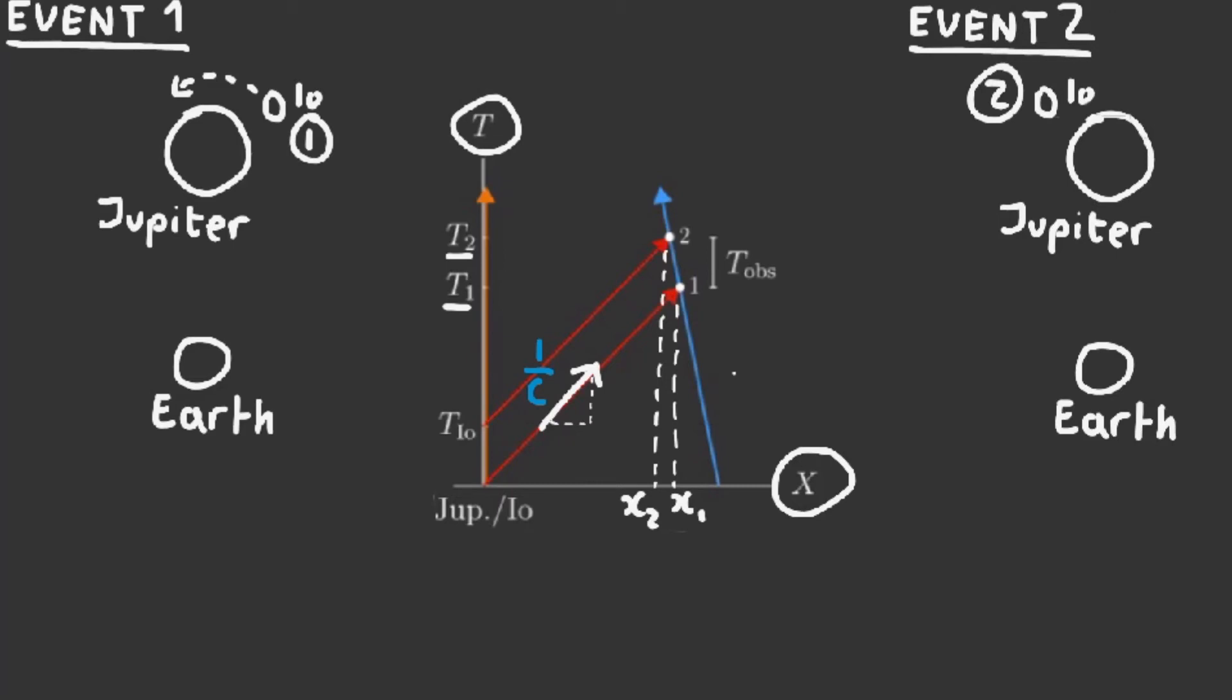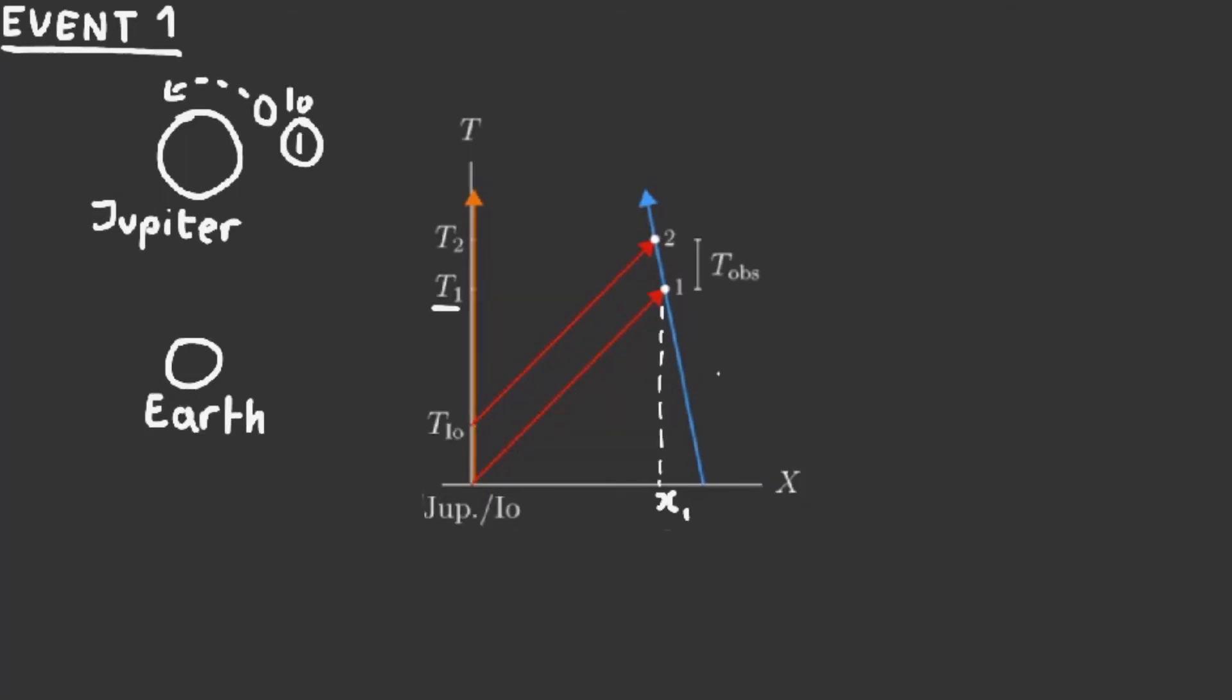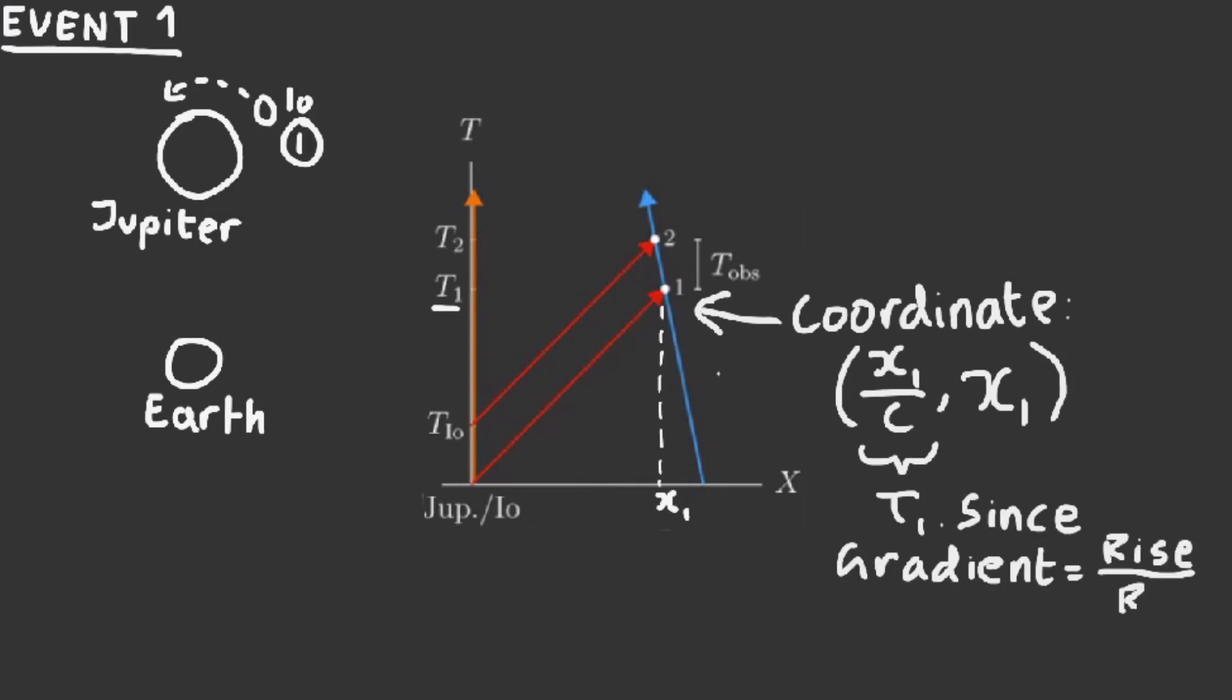Now that we know the details of each event, let's define them and let's take each event one by one. In event one, the distance from Earth to Jupiter is x1, and therefore the coordinates of event one is the following. Keep in mind, as mentioned before, the first term refers to the y-axis and the second refers to the x-axis. x1 over c basically means T1, because gradient is equal to rise over run, and thus rise, which is T1, is equal to run times the gradient, which is x1 over c.